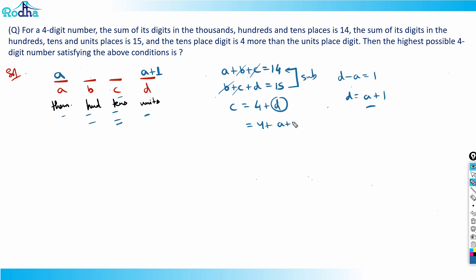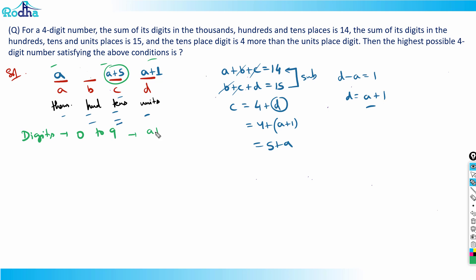Since c = d + 4 and d = a + 1, substituting gives c = (a + 1) + 4 = a + 5. To find the maximum possible value, all digits must be between 0 and 9. The largest expression among the digits is c = a + 5, so its maximum value is 9, meaning a can be at most 4.